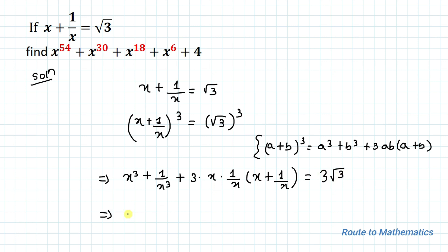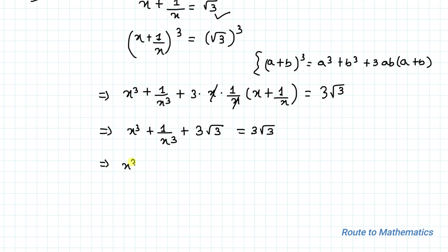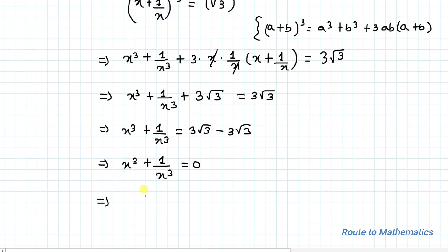Root 3 cube is 3 root 3. The x in (x × 1/x) cancels out, giving us x cube plus 1 by x cube plus 3 multiplied with x plus 1 by x equals to 3 root 3. Since x plus 1 by x equals root 3, we put that value in: x cube plus 1 by x cube plus 3 root 3 equals 3 root 3. This implies x cube plus 1 by x cube equals to 3 root 3 minus 3 root 3, which equals 0.